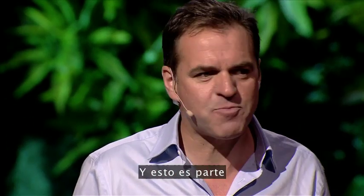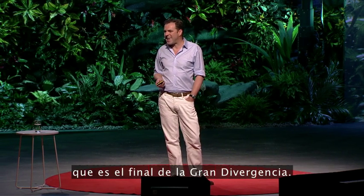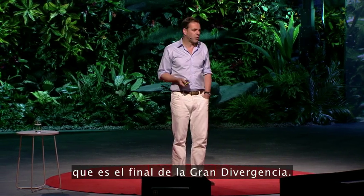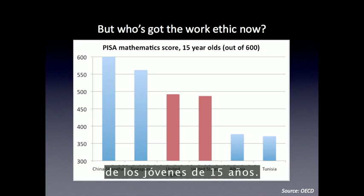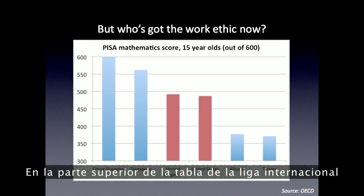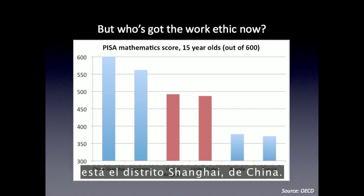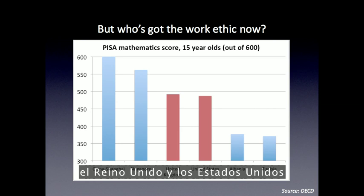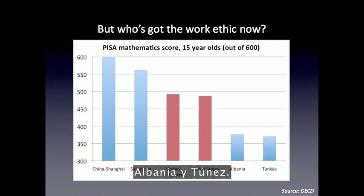And this is part of a really extraordinary phenomenon — the end of the Great Divergence. Who's got the work ethic now? Take a look at mathematical attainment by 15-year-olds. At the top of the international league table, according to the latest PISA study, is the Shanghai district of China. The gap between Shanghai and the United Kingdom and the United States is as big as the gap between the UK and the US, and Albania and Tunisia.